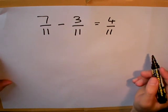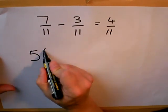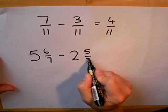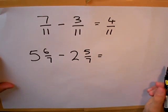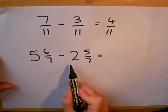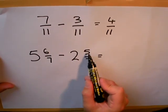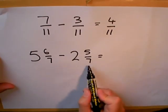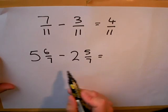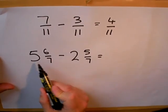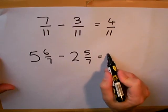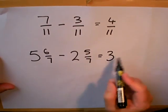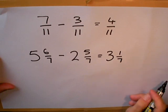Let's look at a mixed number example. Five and six sevenths take away two and five sevenths. Again, I've got some whole numbers here that I can subtract. But I also have six sevenths take away five sevenths. Because these two numbers are the same, the denominator is the same, I simply take away the top numbers. So, five subtract two gives me three whole ones. And six sevenths take away five sevenths, simply one seventh as an answer.